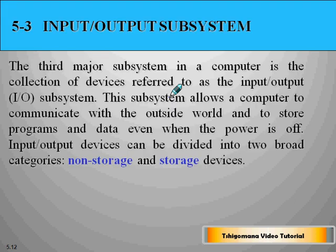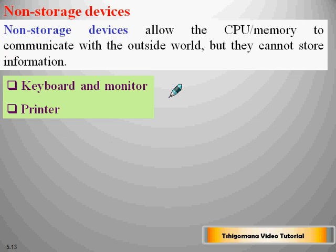The third major subsystem in a computer is the collection of devices referred to as the input-output or I/O subsystem. This subsystem allows a computer to communicate with the outside world and to store programs and data even when the power is off. I/O devices can be divided into two broad categories: non-storage and storage devices. Non-storage devices allow the CPU or memory to communicate with the outside world but cannot store information — for example, the keyboard, monitor, and printer.